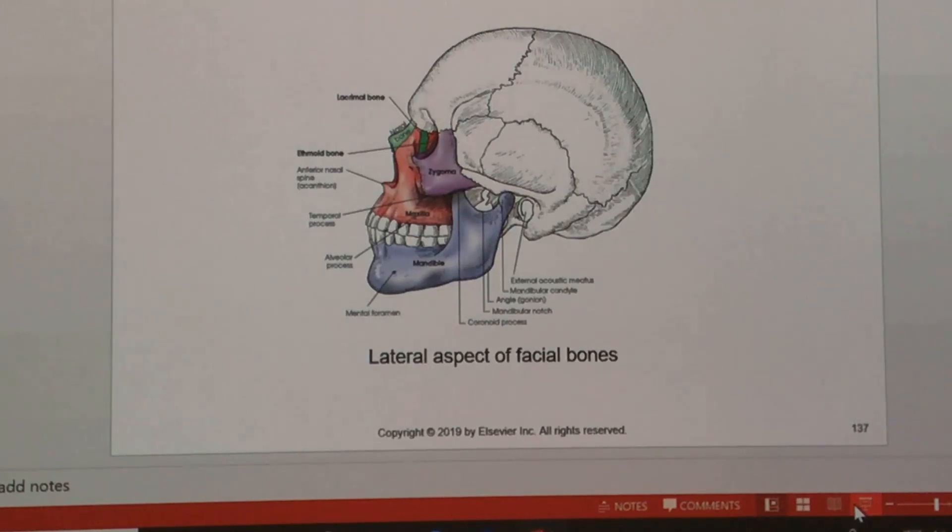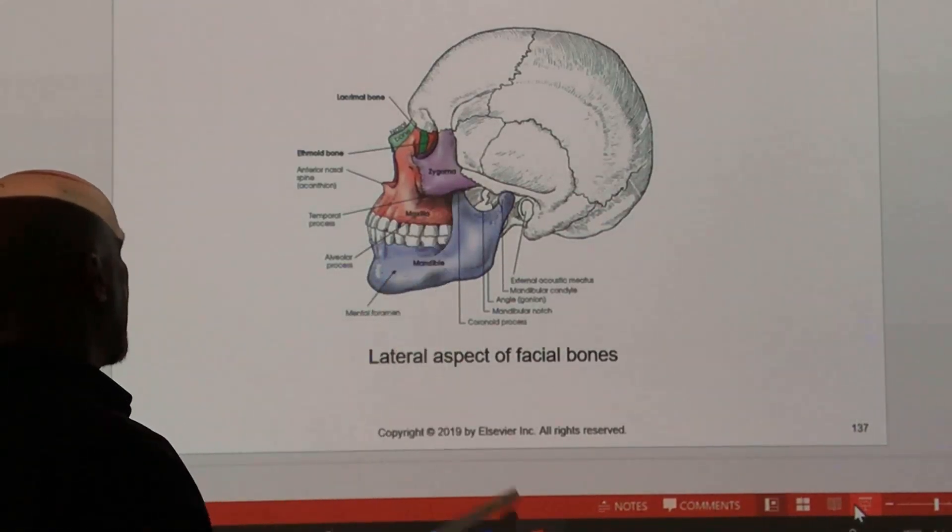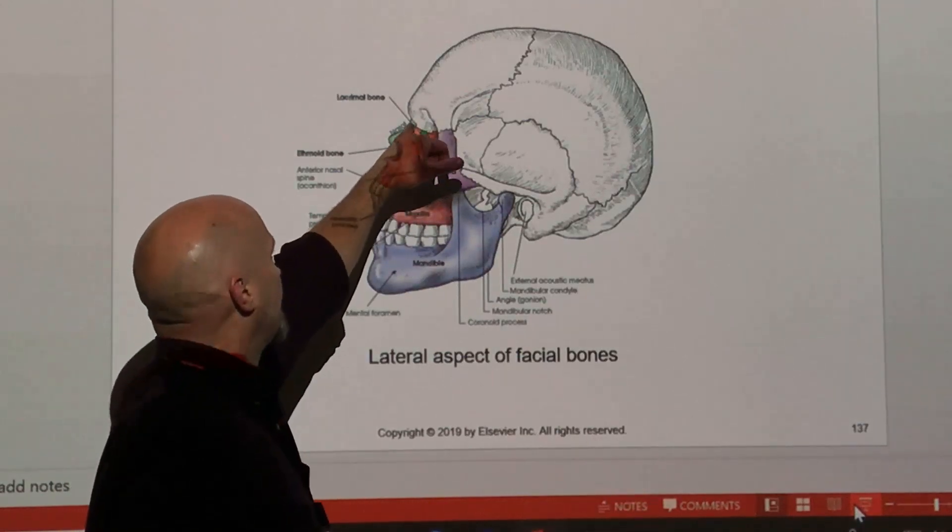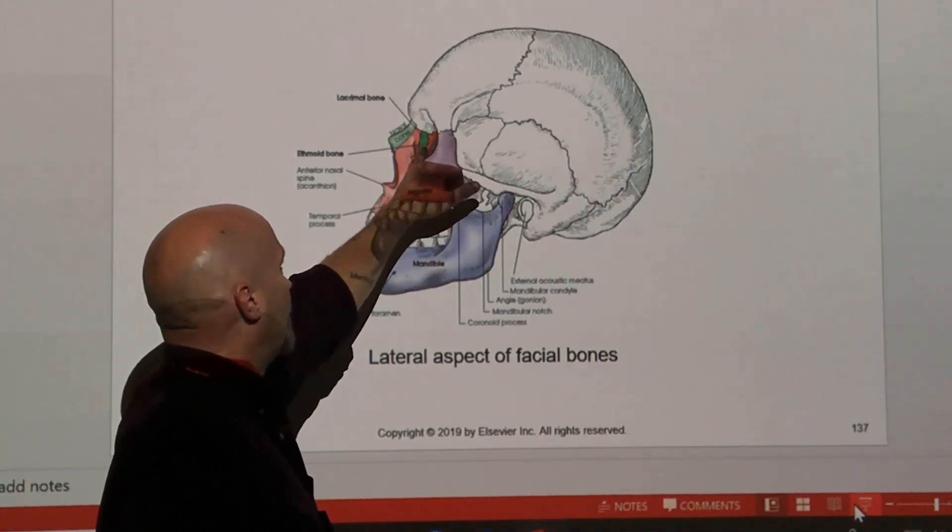So lateral facial bones look like that. We've got the mandible inferiorly, and we'll talk about it in a different section. You've got the maxilla, the zygoma or zygomatic bone, nasal bones up front, and the lacrimal bone.